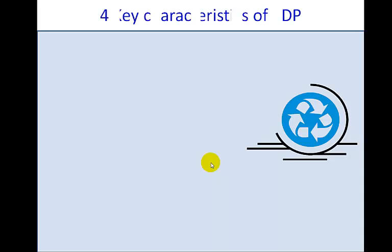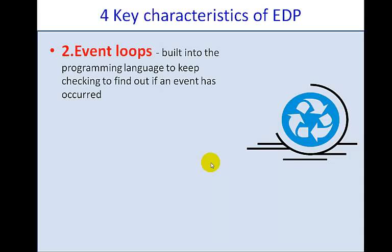Let's look at a couple of the other characteristics. Event loops. All event-driven programs have an event loop. We don't have to worry about them too much, because we don't actually have to code them as programmers. Event loops tend to be built in a particular language already. But they are required, and what they are is a piece of code that works in the background of a program, and it keeps checking to see if an event has occurred. In other words, it runs in a loop. It's repetition.